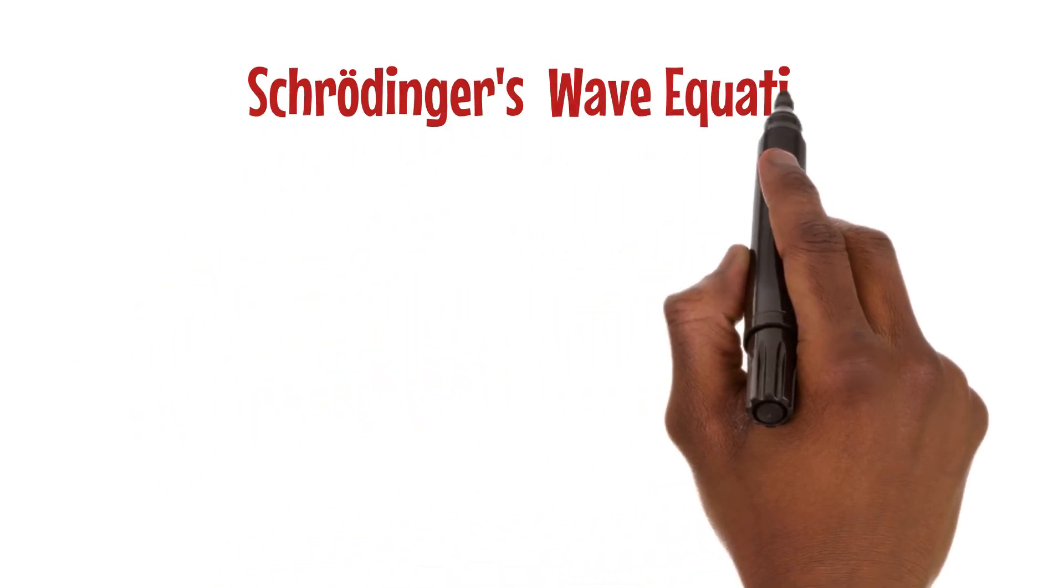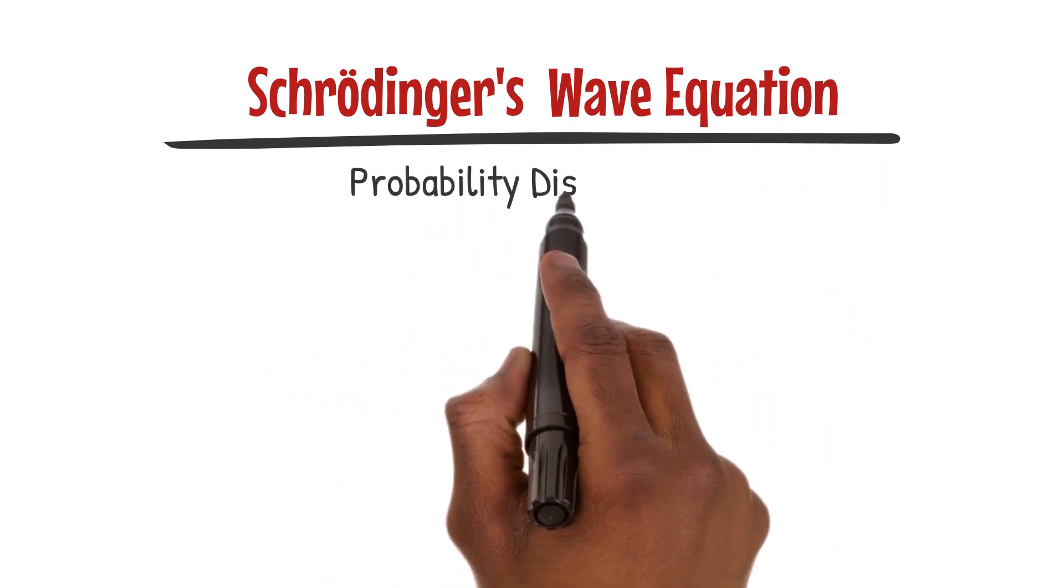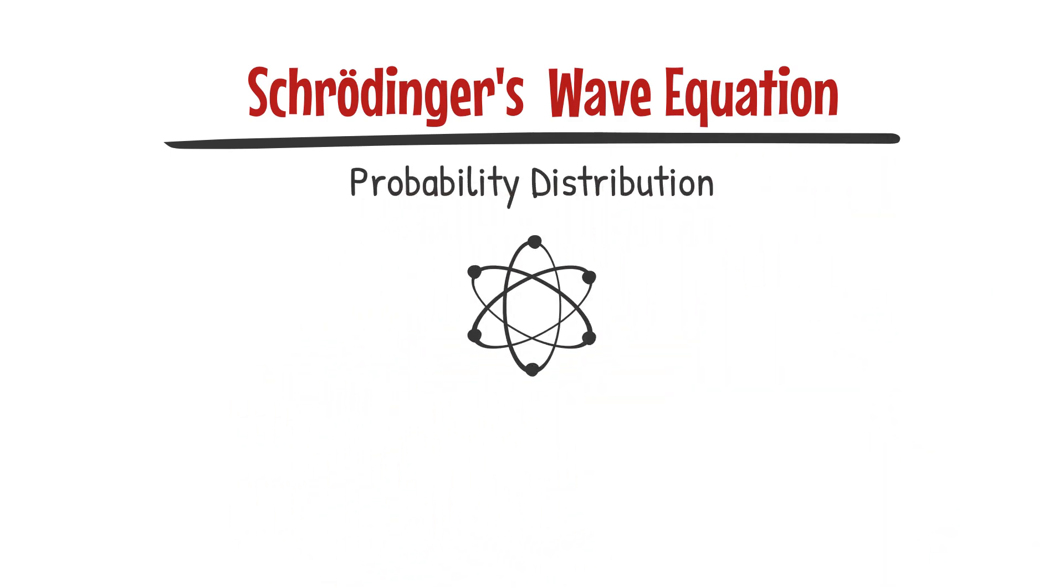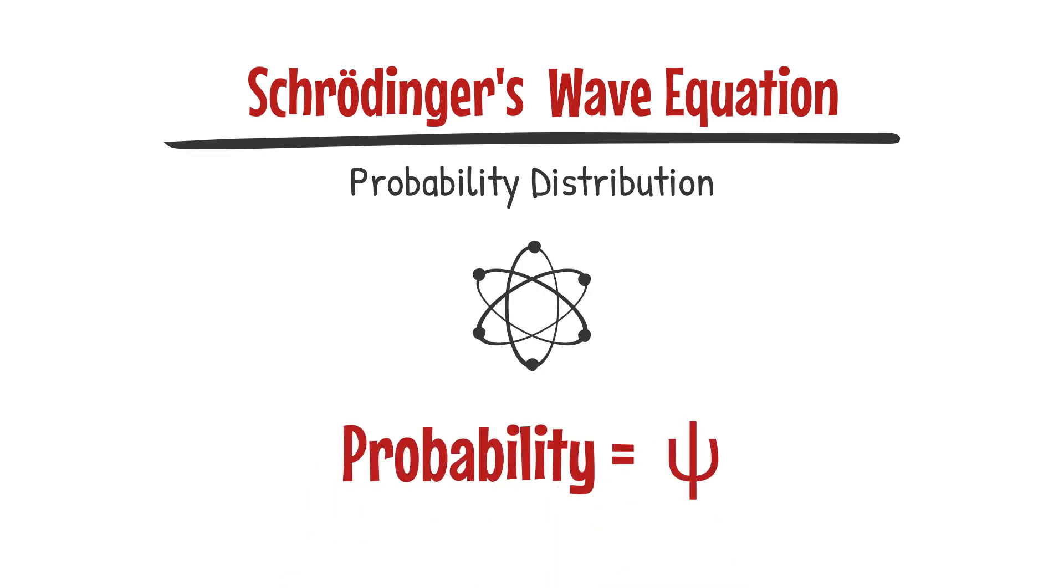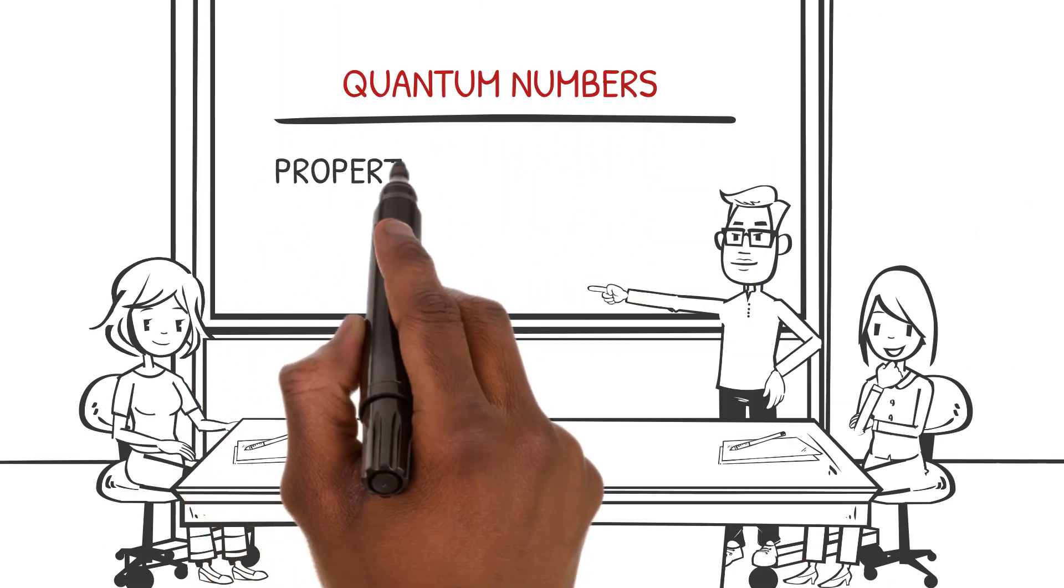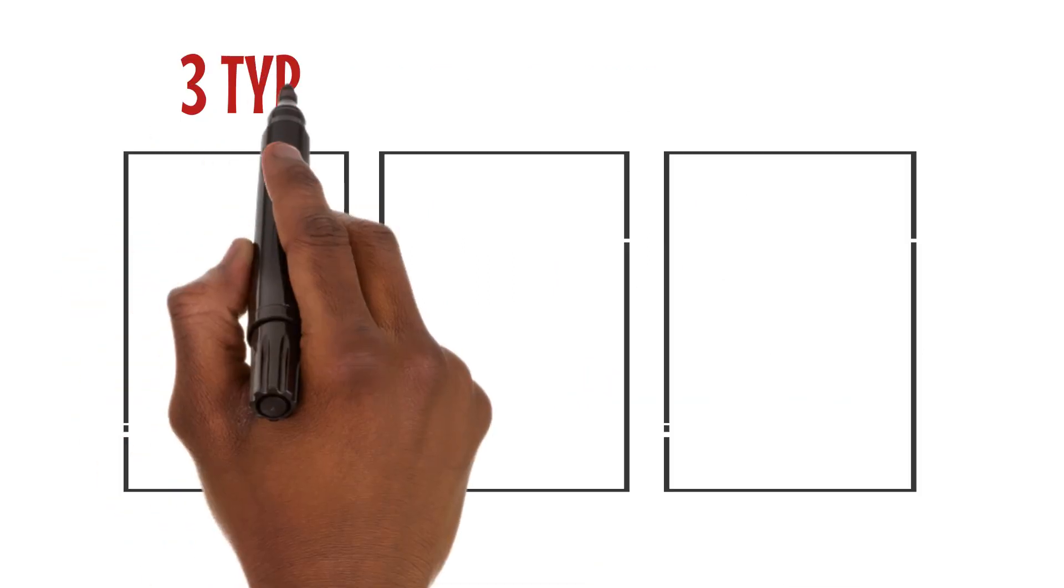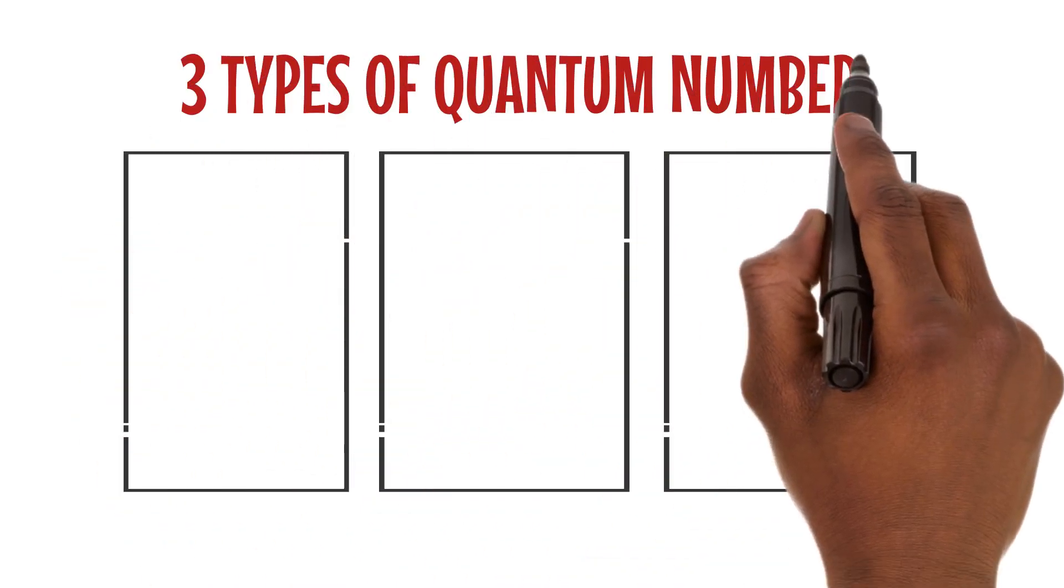By solving Schrödinger's wave equation, we obtain wave functions that describe the probability distribution of finding an electron in different parts of an atom. The probability is represented by the square of the wave function, denoted as psi-square, probability density or charge density. Let's introduce the concept of quantum numbers, which play a crucial role in defining the properties of atomic orbitals.